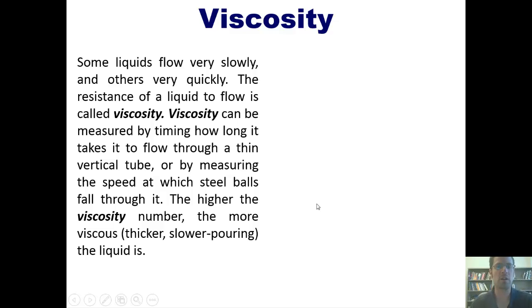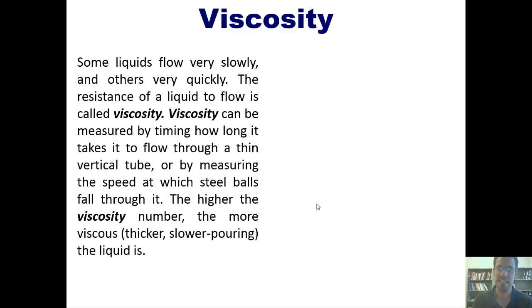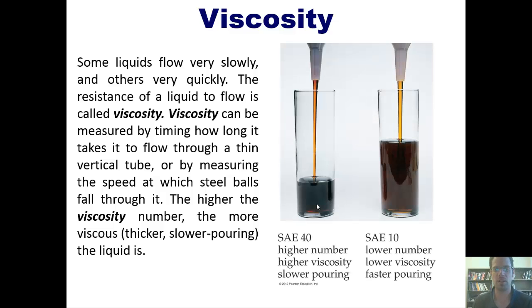Some liquids flow very slowly, and others flow very quickly. The resistance of a liquid to flow is called its viscosity. Viscosity can be measured by timing how long it takes for a liquid to flow through a vertical tube, or by measuring the speed at which steel balls fall through it. The higher the viscosity number, the more viscous, or thicker, or slower pouring a liquid is. In this figure we see SAE numbers for two different liquids. The one to the left has a higher number, which means that it's thicker, pours more slowly, and is therefore more viscous.